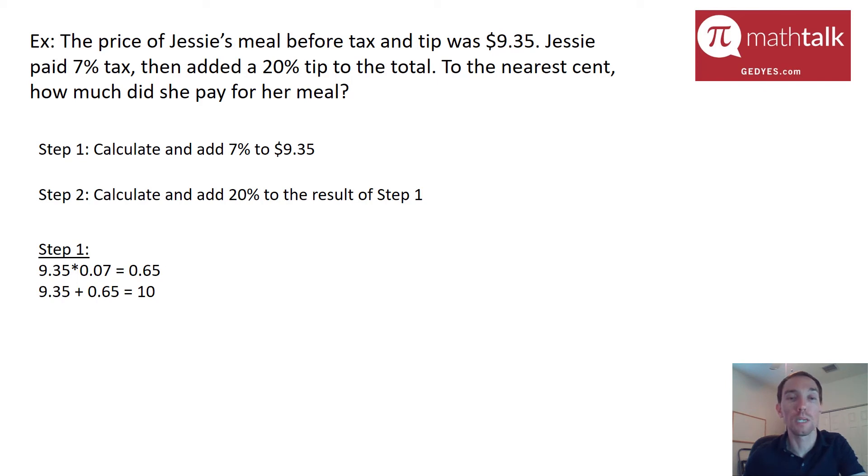Now I need to figure out what 20% of that value is and add it to what I got. So I'm going to take the 10, I'm going to figure out what's 20% of that so I'm going to take 10 times 0.2 and that gets me 2. I'm going to take that value, I'm going to add it to 10. So 10 plus 2 is 12.